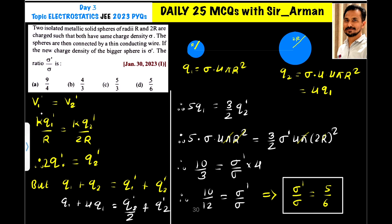The potentials are equal. Now k and k, r and r will get cancelled. So 2q1 dash equals q2 dash.